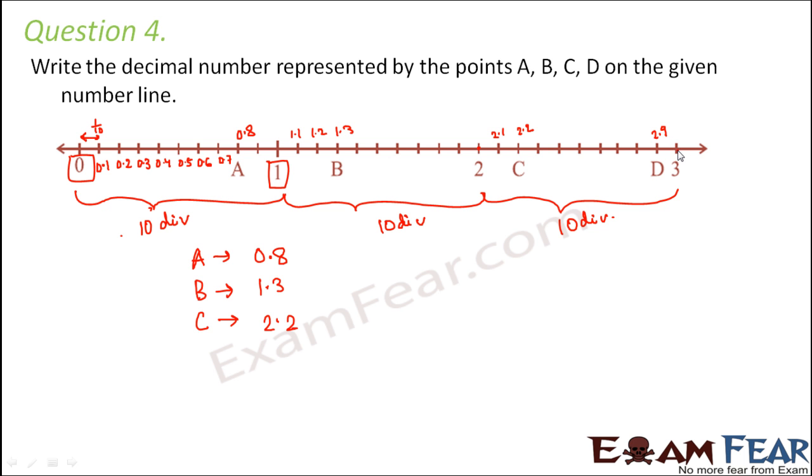So that this becomes 10 and this becomes three. So D would be 2.9. So in this pattern, we could determine the values of A, B, C, D.